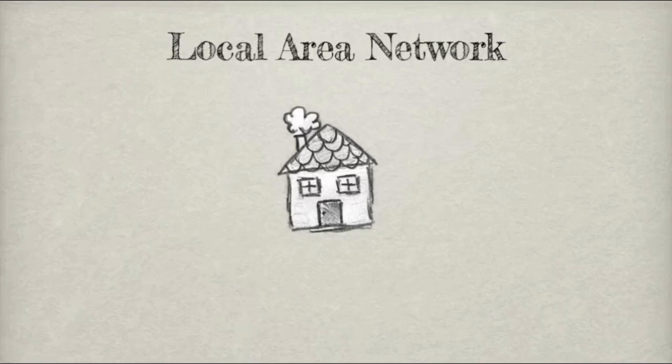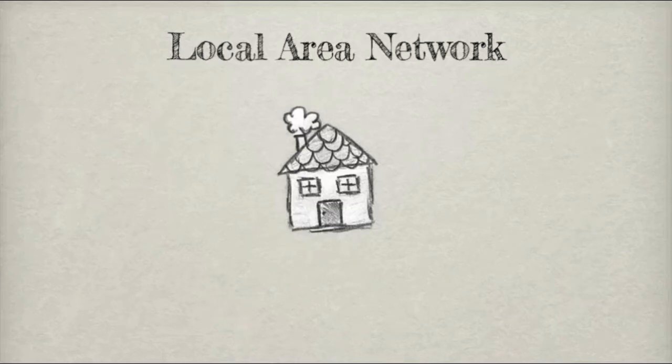The first one is a local area network. Normally you find a local area network inside one building — normally a house. So inside your home you might have a desktop PC, a laptop, maybe some of your games consoles all connected to the same network. You're on a local area network — you're on a LAN.